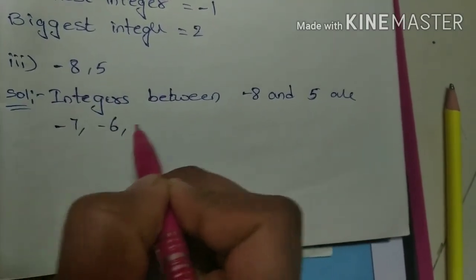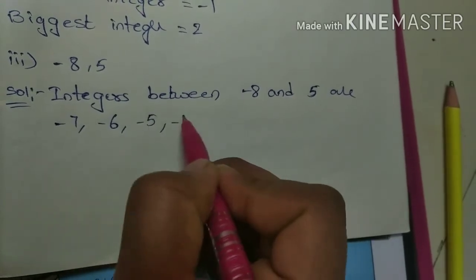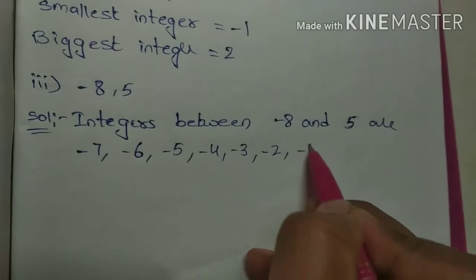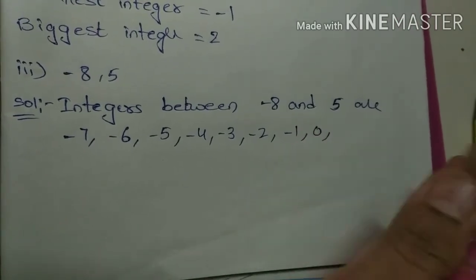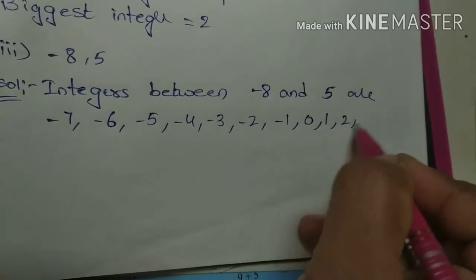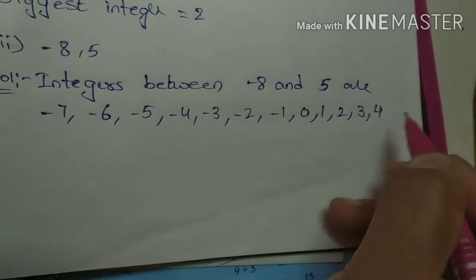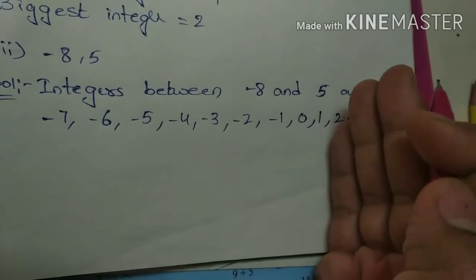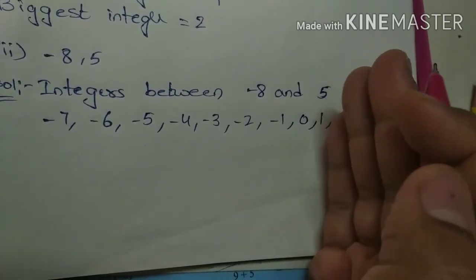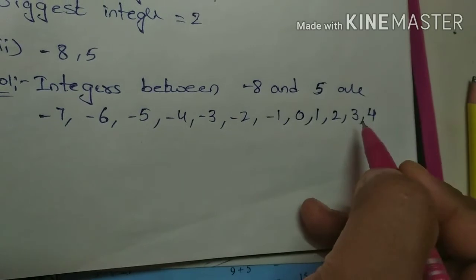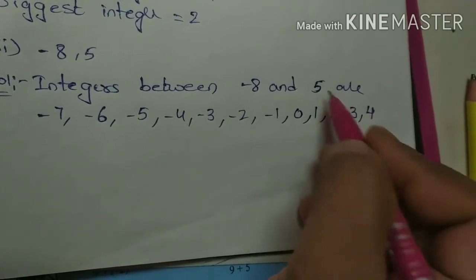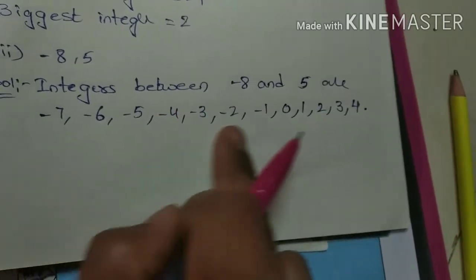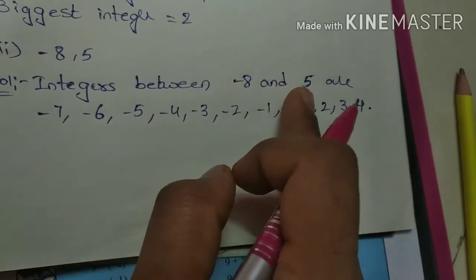So: minus seven, minus six, minus five, minus four, minus three, minus two, minus one, zero, then one, two, three, four. Up to where? We should write positives up to before five. So write up to four only, don't write five again. These are all the integers in between minus eight and five.